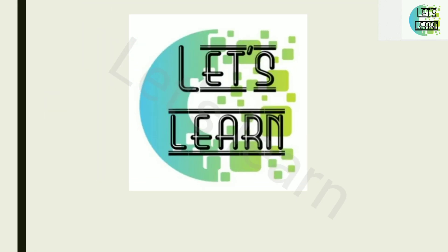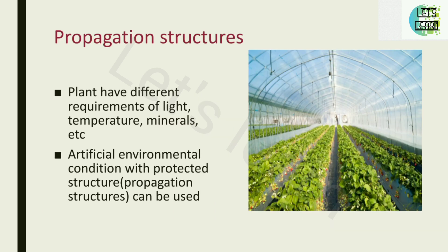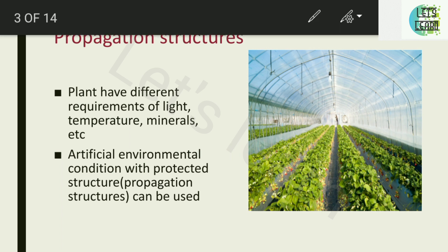Welcome to Let's Learn Channel. In today's video we will be learning about propagation structures, which can also be called protected structures. Plants have different requirements of light, temperature, minerals, nutrients, etc. So artificial environment conditions with protected structures can be used if we need any particular plant in a needed season to get the desired outcome. This structure is called a protected structure or propagation structure.